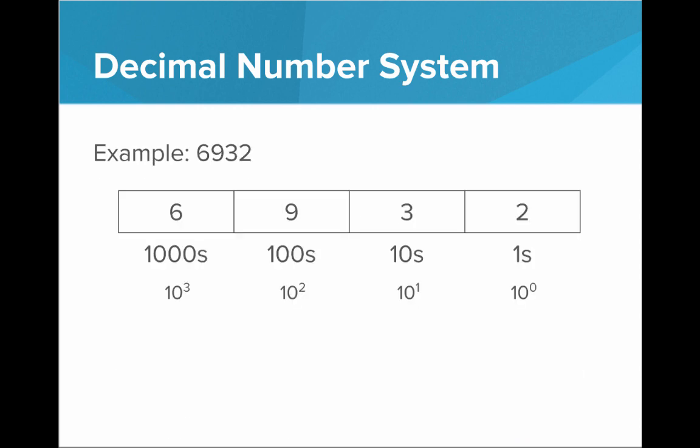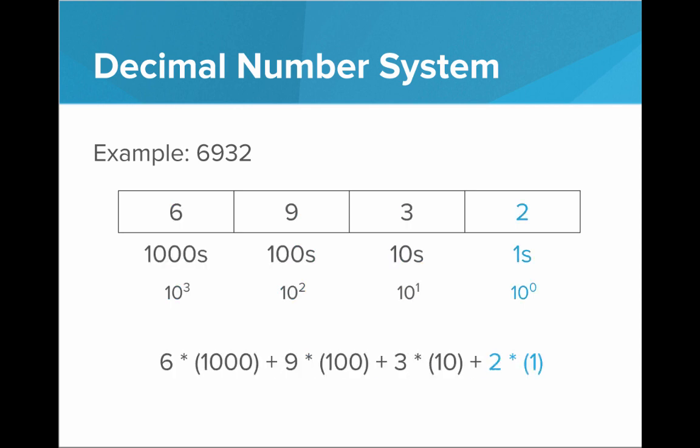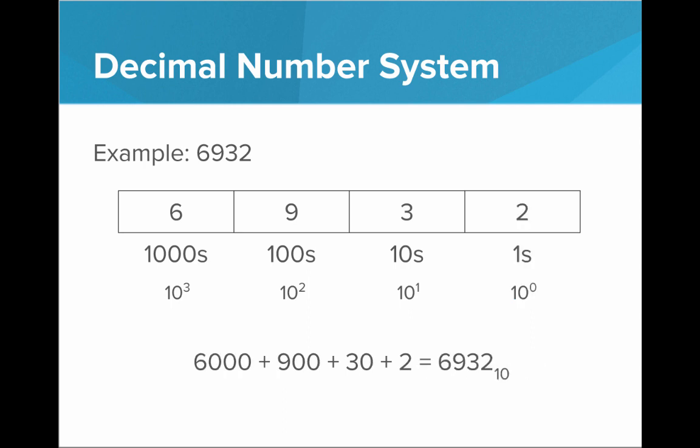To get the number from a string of digits, all we have to do is look at how many groups of each place we have. We have 6 groups of 1000, 9 groups of 100, 3 groups of 10, and 2 groups of 1. That gives us 6,000 plus 900 plus 30 plus 2, and we put that all together: 6,932. So that's how the decimal system works.